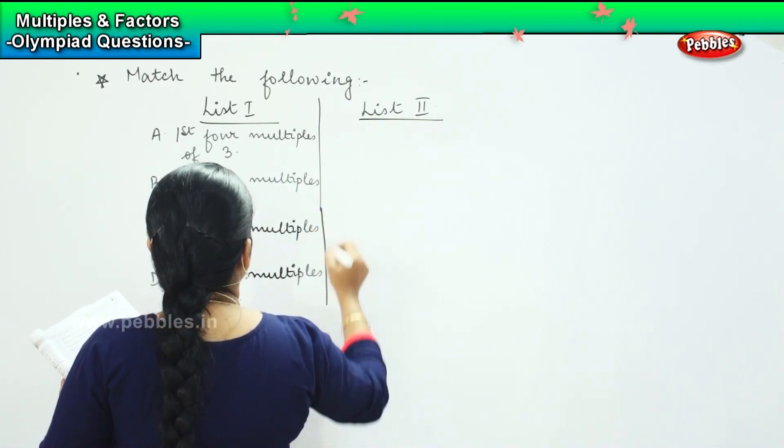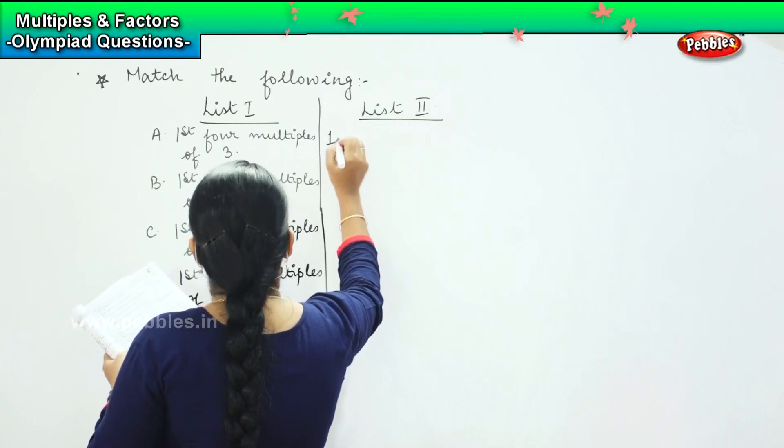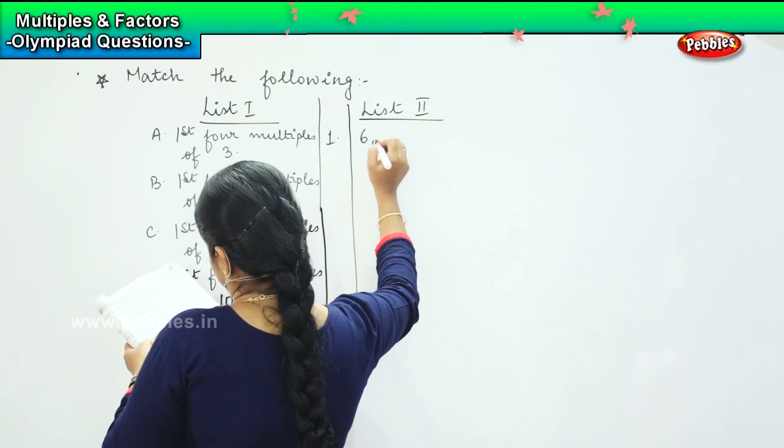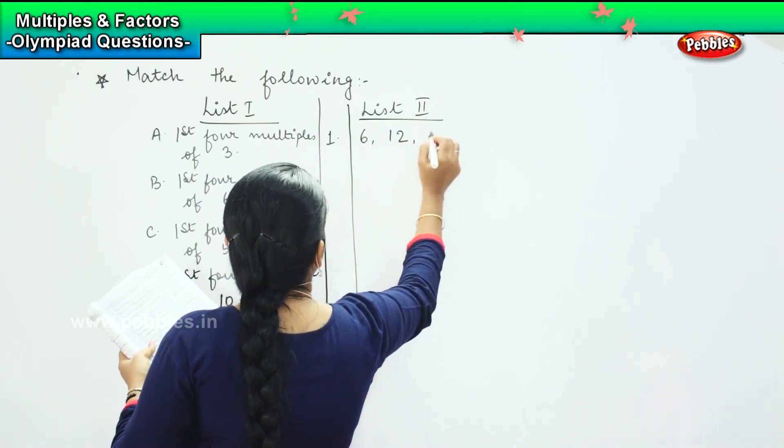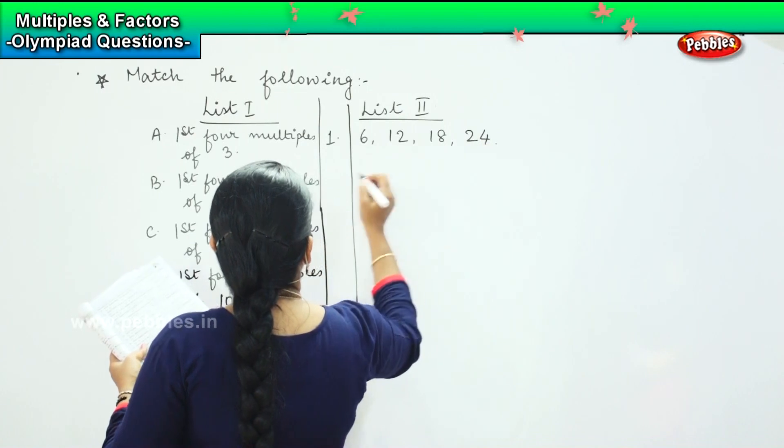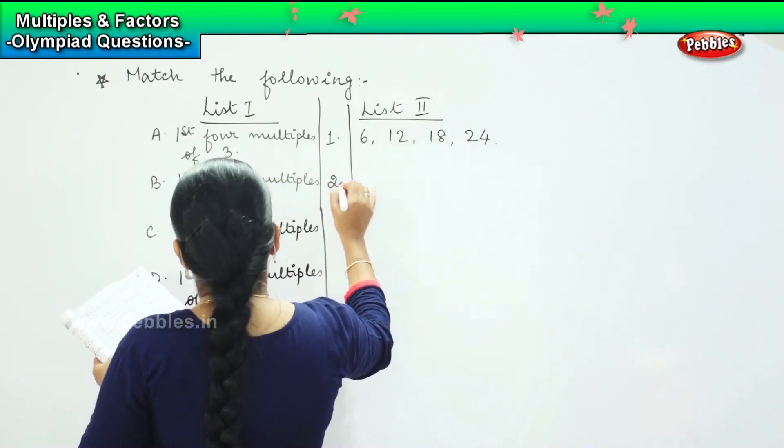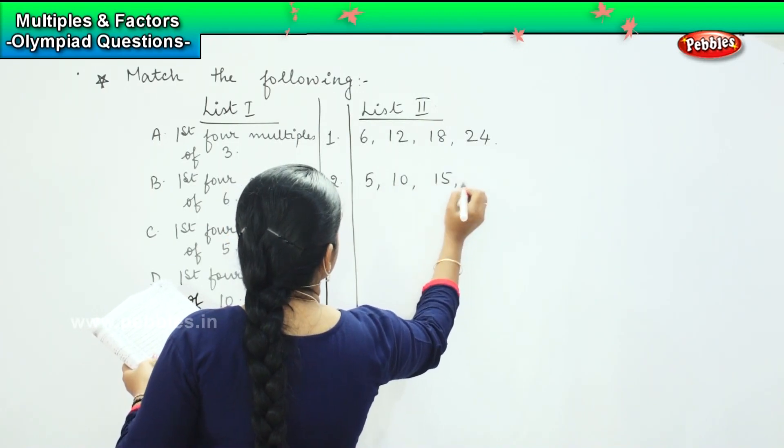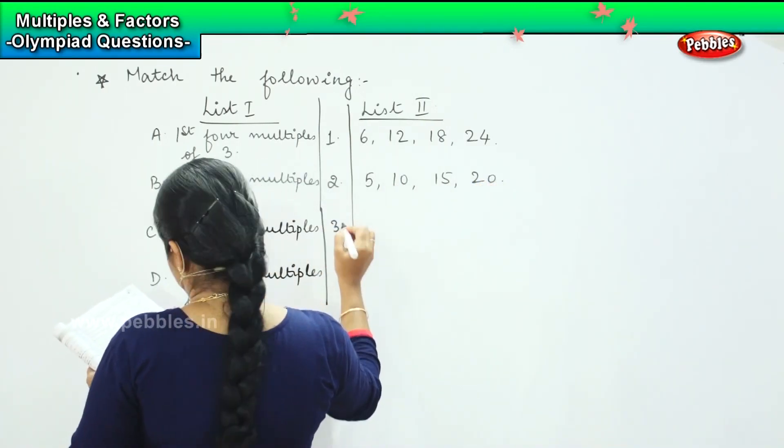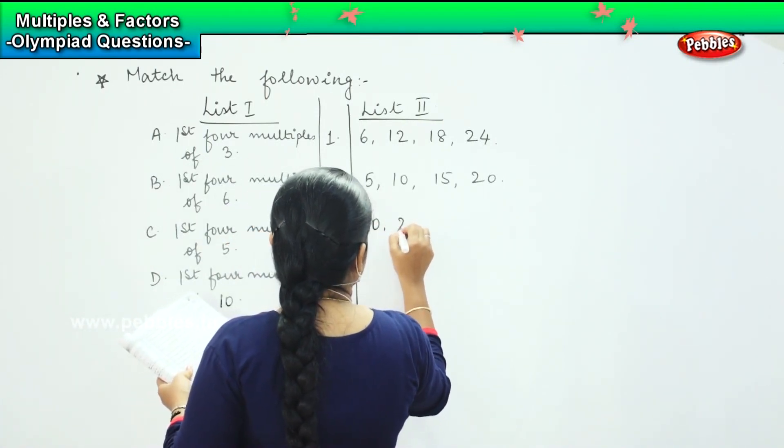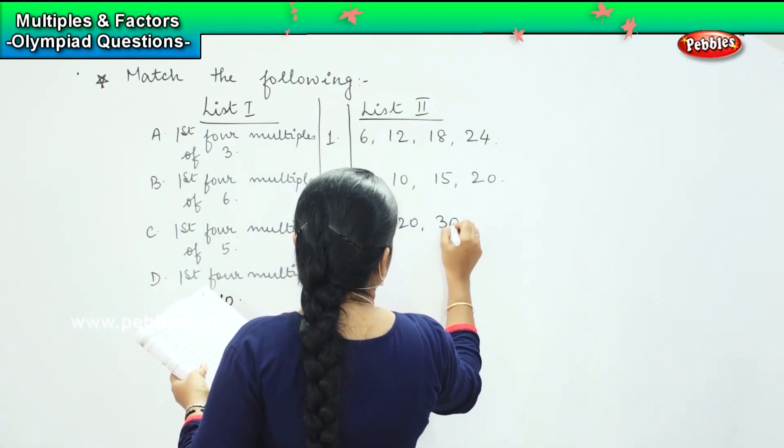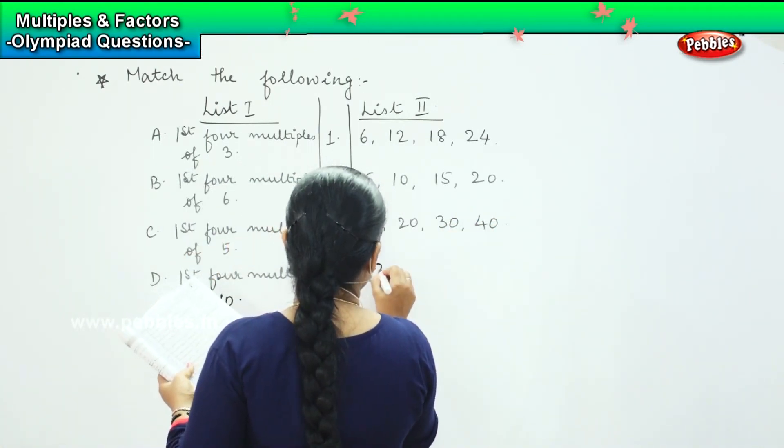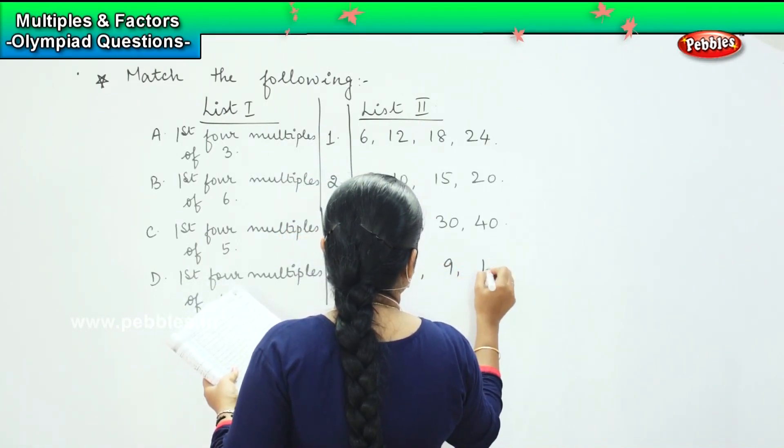And this side you have 6, 12, 18, 24. Number two, 5, 10, 15, 20. Number three, 10, 20, 30, 40. And number four, 3, 6, 9, and 12.